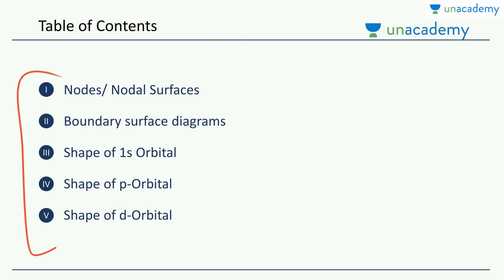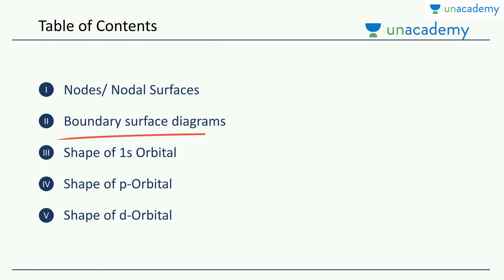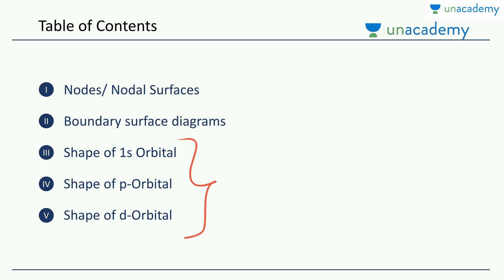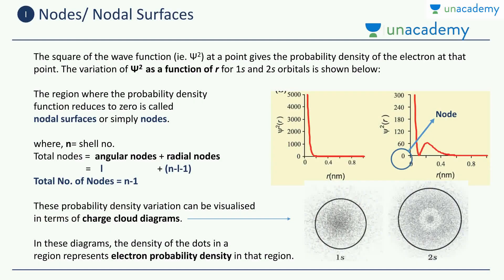We will be taking up five topics in this video. Firstly, we will study what are nodal surfaces and what do we mean by boundary surface diagrams — this is how we represent the orbital shape. Then we'll take the three orbitals which we know — s, p, and d — and see what are the shapes of these orbitals. Let's begin with our first topic, which is the topic of nodes or the nodal surfaces.